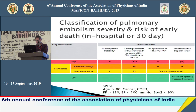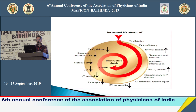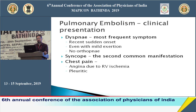The pathophysiology of massive pulmonary embolism: mechanical obstruction of the pulmonary artery leads to RV pressure overload, RV dilatation, tricuspid regurgitation, decreased LV inflow, decreased LV preload, hypotension, reduced coronary perfusion, RV ischemia and infarction, further RV dysfunction — creating a vicious cycle leading to death.